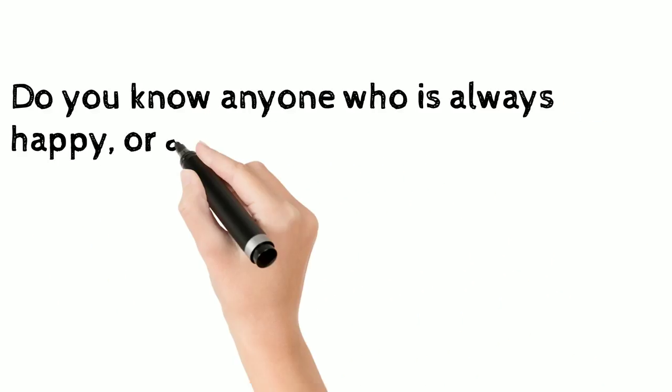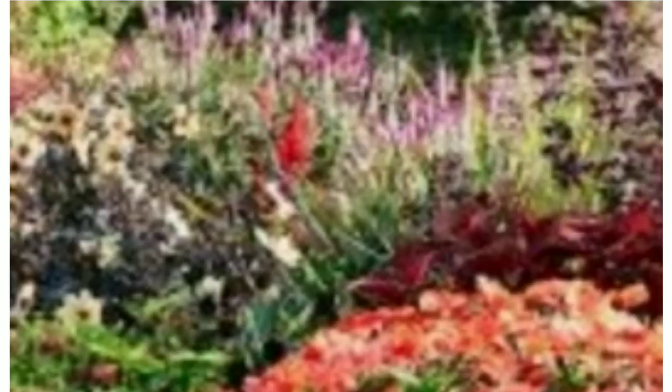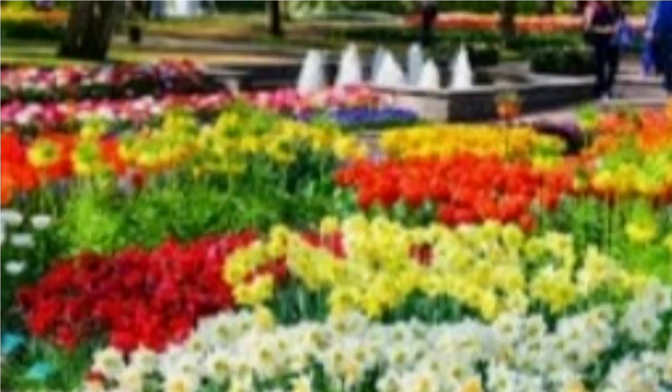Coming to the next question: Do you know anyone who is always happy or always sad? If you were granted one wish, what would you ask for? Students, look around — life is a mixture of sorrows and happiness, ups and downs. Certainly it is clear that people cannot remain happy or sad all the time. You can take the examples of nature, seasons, and flowers. Wishes also vary according to individual choices. I am pretty sure this lesson will influence you a lot.